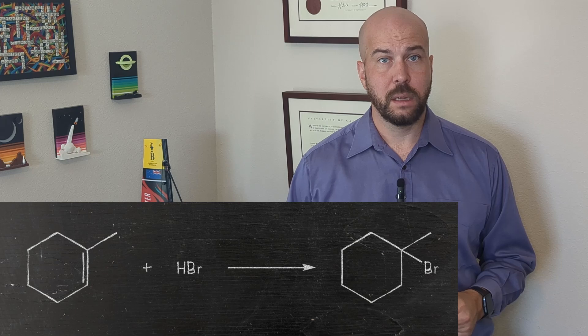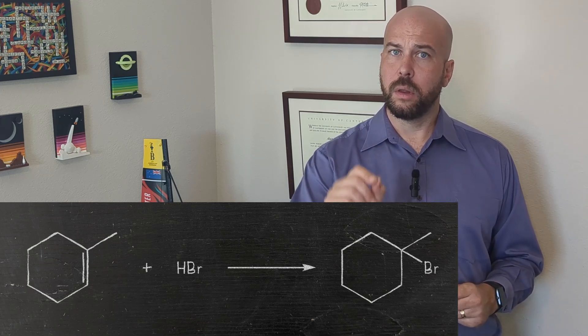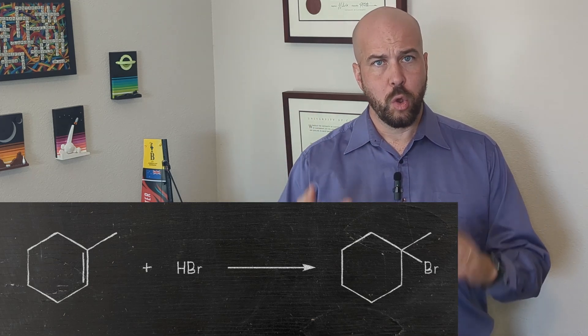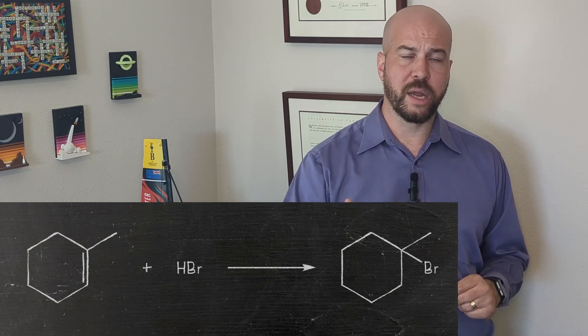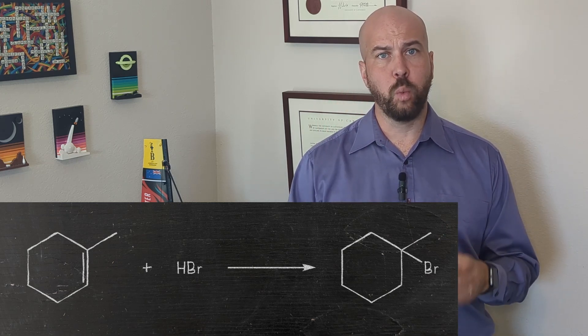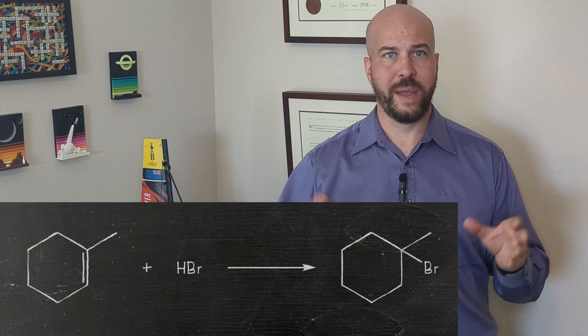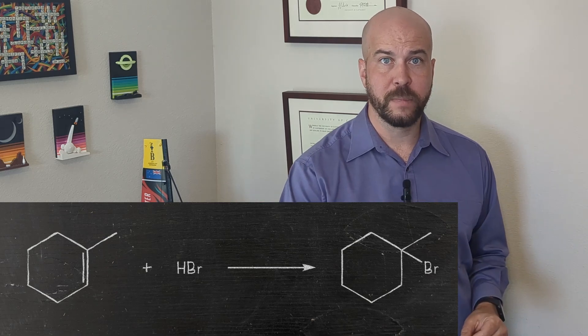When we next encounter this reaction, it is slightly more complicated—our alkene is no longer symmetrical. For example, we could have 1-methylcyclohexene as our reactant. Now when the reaction occurs, we see only one product: the formation of 1-bromo-1-methylcyclohexane, and that's it.